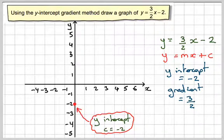So going along two squares, and then up 3, my next point will be here. Continue that, 2 along, 3 up.